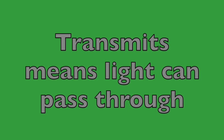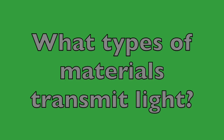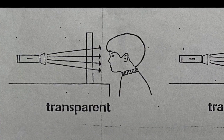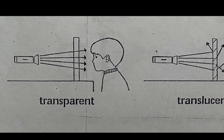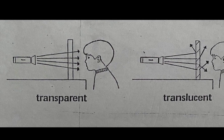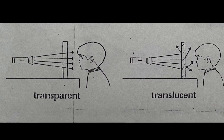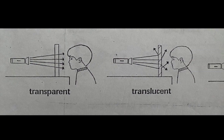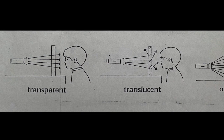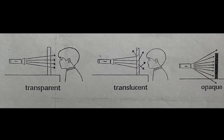The word 'transmits' means light can pass through. What type of materials transmit light? Transparent lets light pass through, so transparent materials transmit light. Translucent materials allow some light to pass through, so they also transmit light. Opaque objects do not transmit any light — they make shadows.